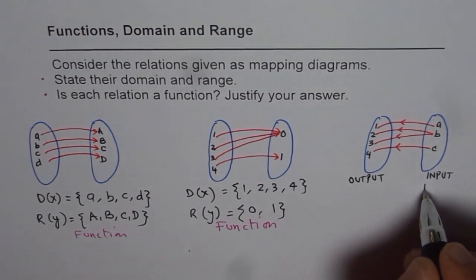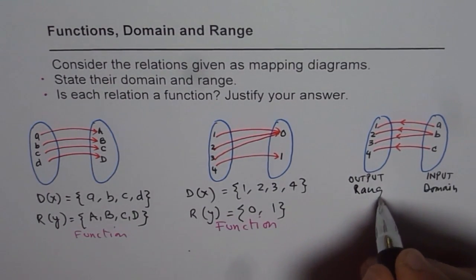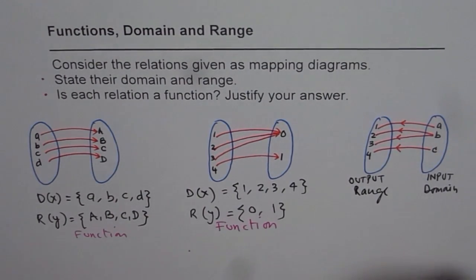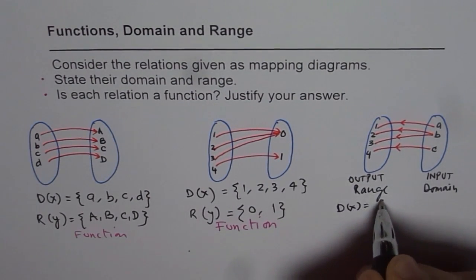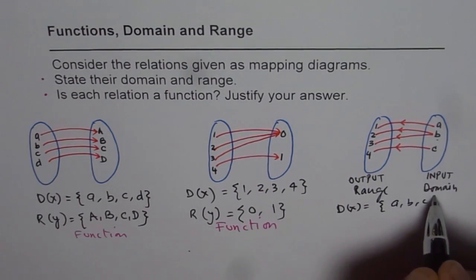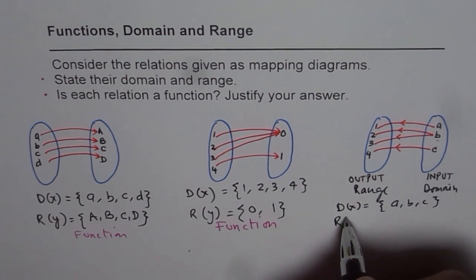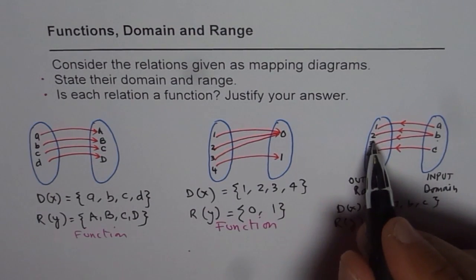This is domain, you understand? The set here is domain and that part is range. Since we reverse the sign, it is kind of tricky. Now let us write down domain. So domain here equals a, b, c. ABC is domain and range is the y values given to us as 1, 2, 3, 4.